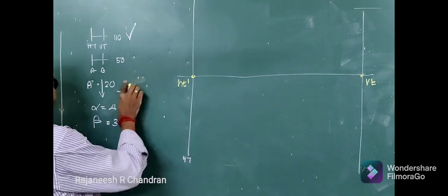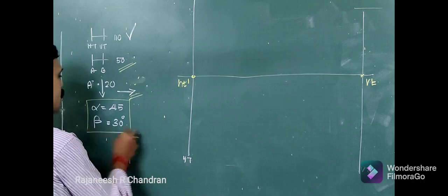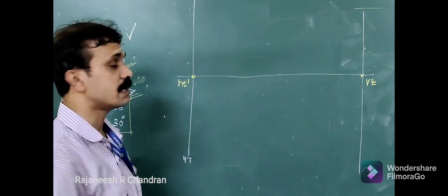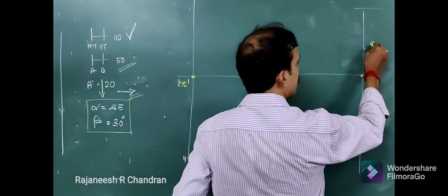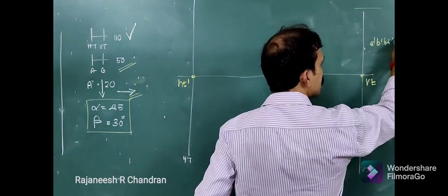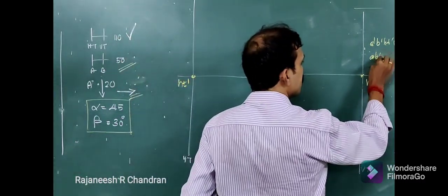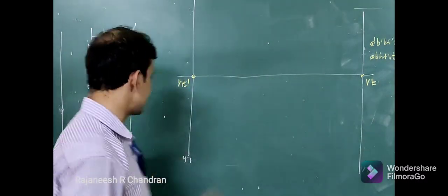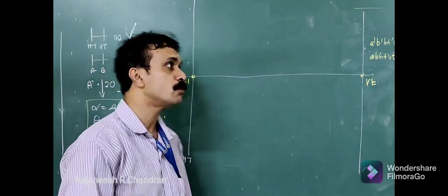What is given? Alpha = 45 degrees and VT dash. We know that A dash, B dash, HT dash, and DT dash all lie on the same line. Alpha is the angle of the front view, meaning it is the angle that line A dash–B dash makes. So A dash, B dash, HT dash, and DT dash are collinear, and this angle is known as alpha.